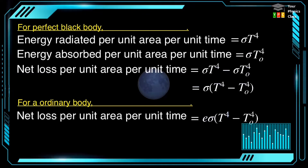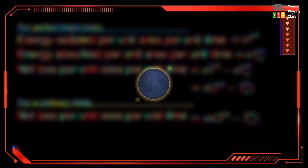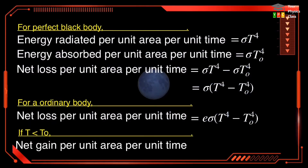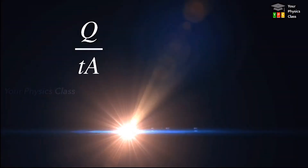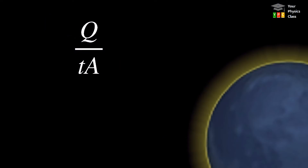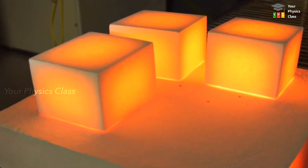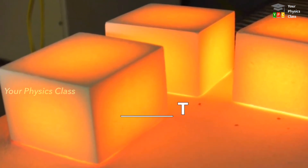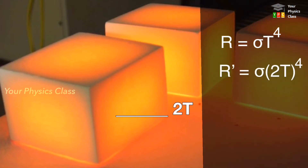If the body is at a temperature lower than the surrounding, then things will be reversed — this will be the net gain in thermal energy of the body per unit area per unit time. Since the loss or gain of energy per unit area per unit time is proportional to the fourth power of absolute temperature, this law plays an important role in deciding thermal equilibrium of physical systems. For example, if the temperature of the body is doubled, the power radiated will increase by a factor of 16.